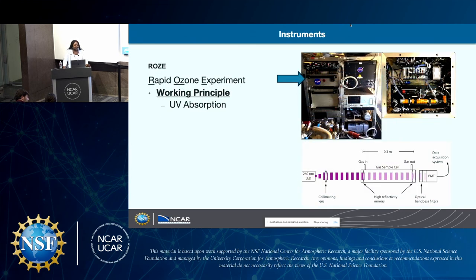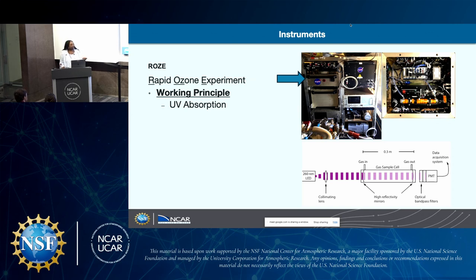ROSE is actually a little bit different. Its working principle is that it uses UV absorption. We use a LED at 260 nanometers and shoot it through our gas sample, because ozone is known to absorb this rate of light. We use two mirrors to keep the light from escaping, and then the light is measured with a photomultiplier. ROSE is different from the other two instruments in that instead of the PMT measuring how many photons are released, we're measuring how much is absorbed by the ozone.